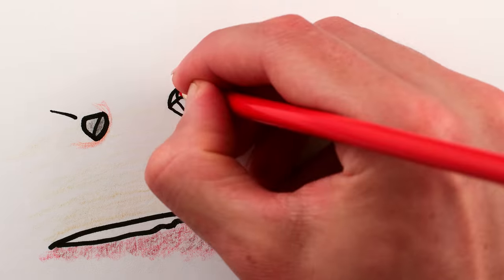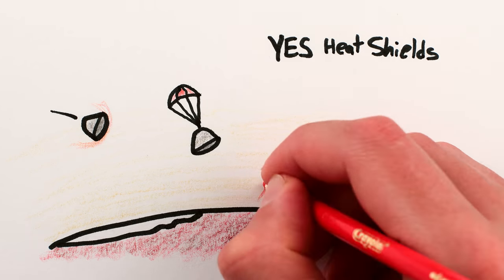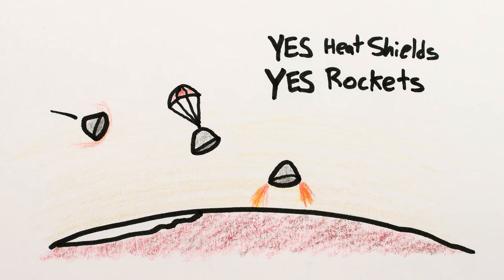However, the air on Mars is literally the worst of both worlds. Thick enough that you actually have to deal with it with heat shields and walls, but thin enough that it doesn't help you slow down much and you also need to use rockets.